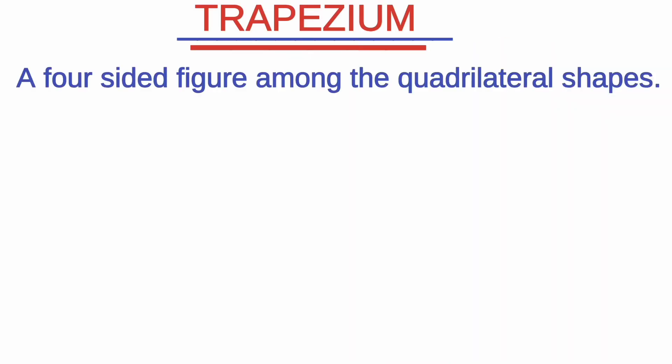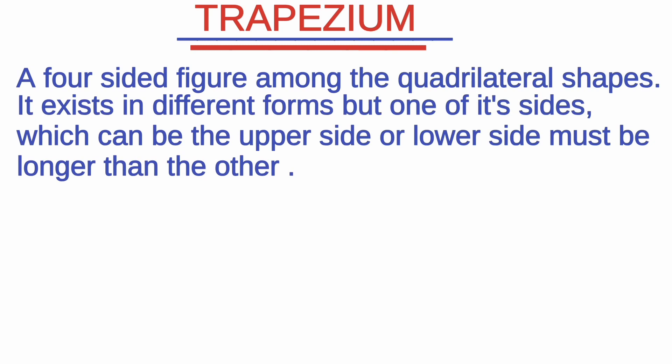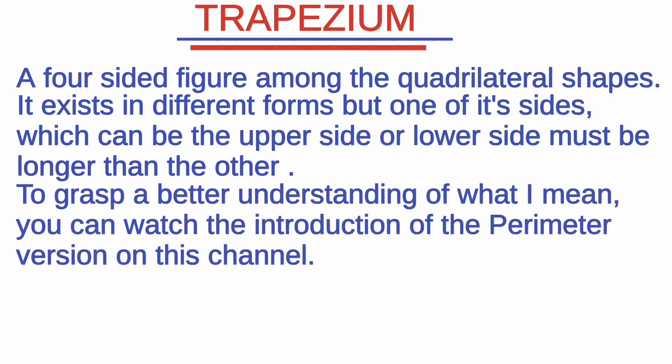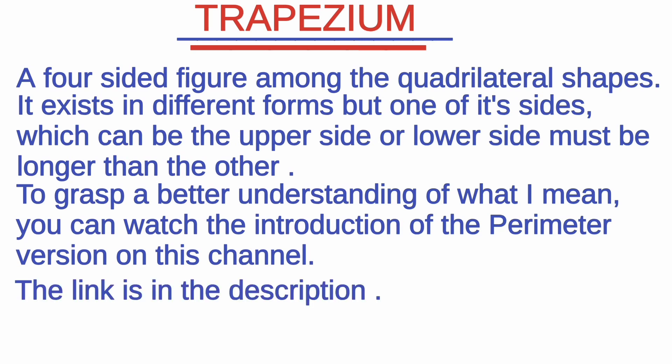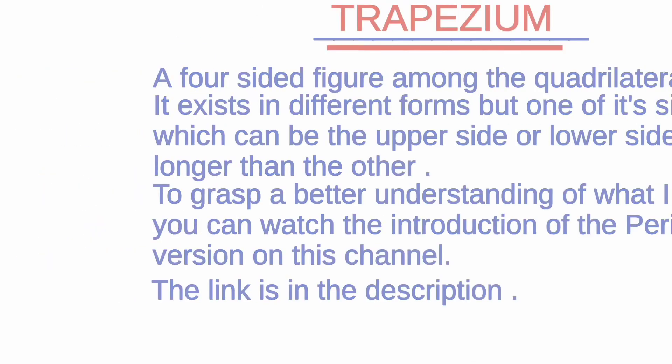Trapezium. A four-sided figure among the quadrilateral shapes. It exists in different forms, but one of its sides — which can be the upper side or the lower side — must be longer than the other. To grasp a better understanding, you can watch the introduction of the perimeter version on this channel. The link is in the description.